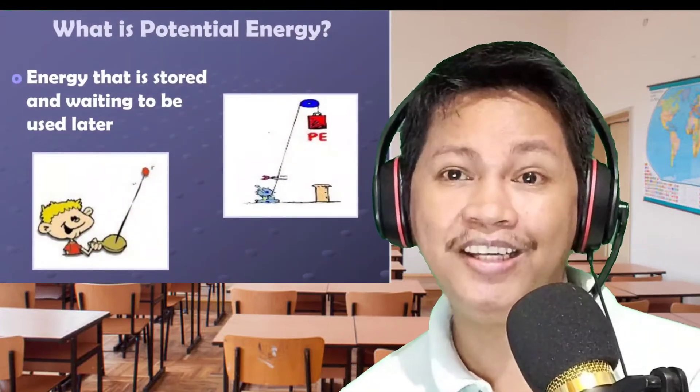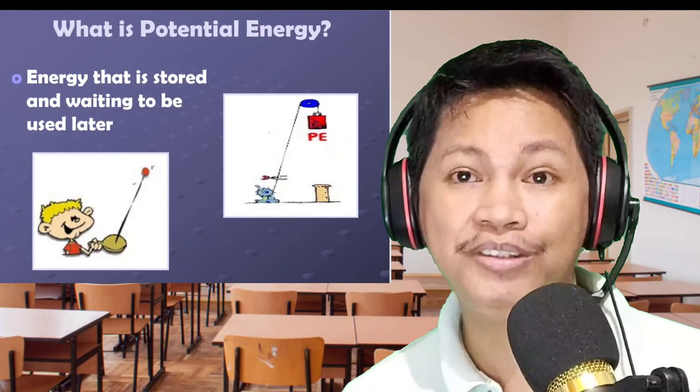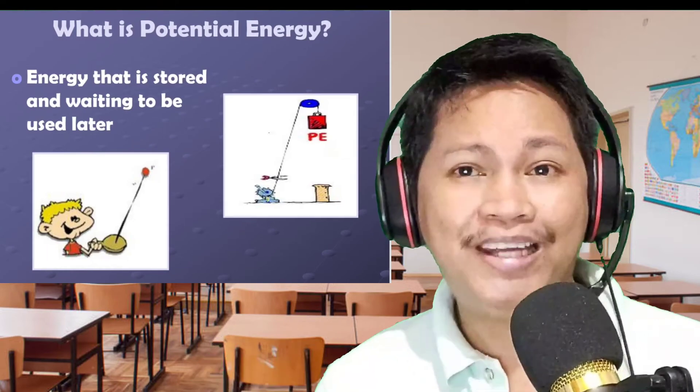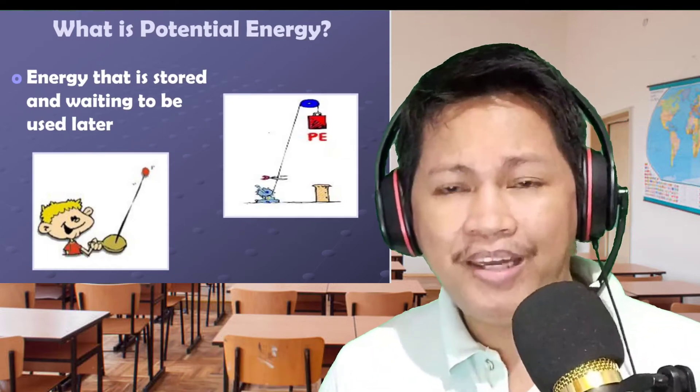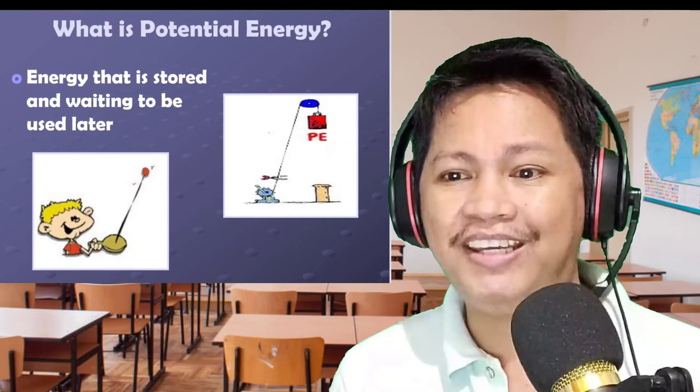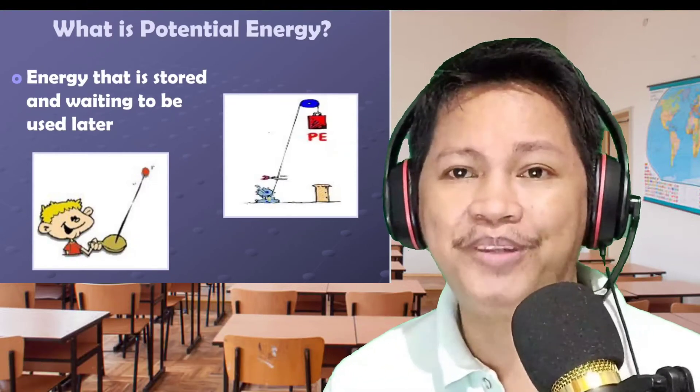Potential energy is energy that is stored and waiting to be used later. For example, in real life, when you say something to your friend like 'you have the potential to become a basketball player' or 'a good writer,' you're using the word potential to mean that there is something stored in that person — a talent or skill they can use to become whatever they want to be.